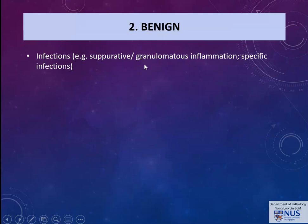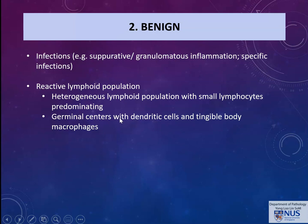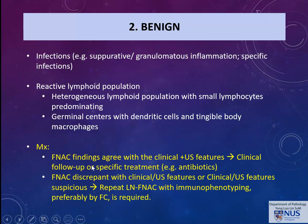The next category is benign (B9), where a diagnosis of infectious etiology can be given — such as suppurative or granulomatous inflammation and, if possible, specific infections — or a reactive lymphoid population, for example a heterogeneous lymphoid population with a predominance of small lymphocytes or readily appreciable germinal center material. Management depends on the clinical picture: if FNAC findings agree with clinical and sonographic features, follow-up or specific treatment is indicated. If findings are discrepant, a repeat FNAC with ancillary testing such as immunophenotyping by flow cytometry is required.